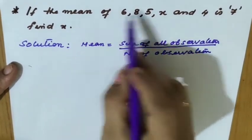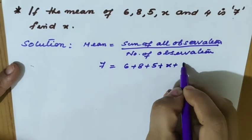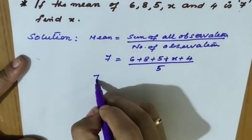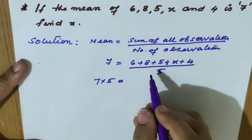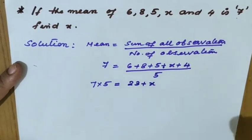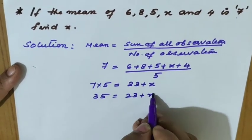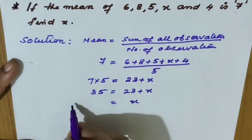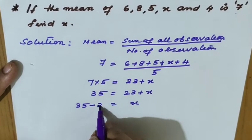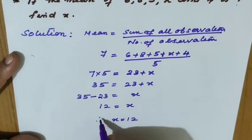The mean is given as 7. So: 7 equals (6 + 8 + 5 + x + 4) divided by 5. Bringing 5 to this side: 7 into 5 equals 6+8+5+4 plus x, which gives 35 equals 23 plus x. Bringing 23 to this side: x equals 35 minus 23, which equals 12. Therefore x equals 12.